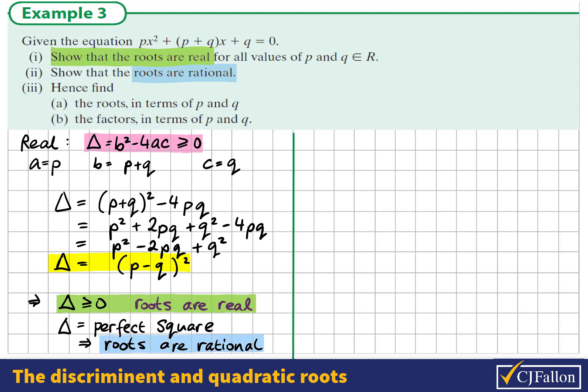In part three of the question, we're asked to find the roots and the factors in terms of p and q. We'll use a quadratic formula to do this. The quadratic formula says x = (-b ± √Δ) / 2a.